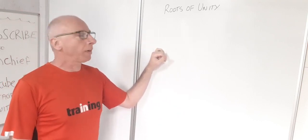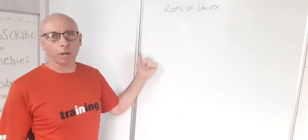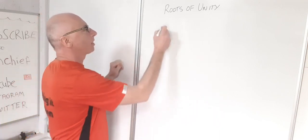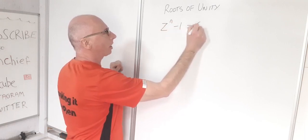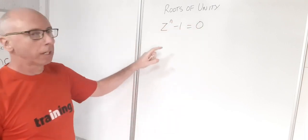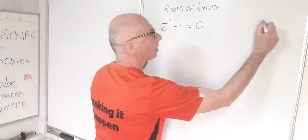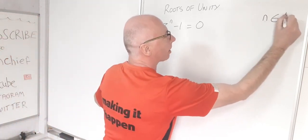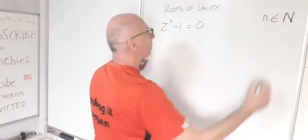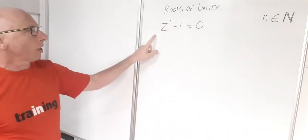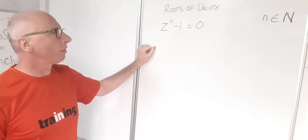Roots of unity are found by looking at the solution for a particular polynomial: z to the power of n minus 1 equals 0, where n is a positive integer. The solutions to this will give us our roots of unity.